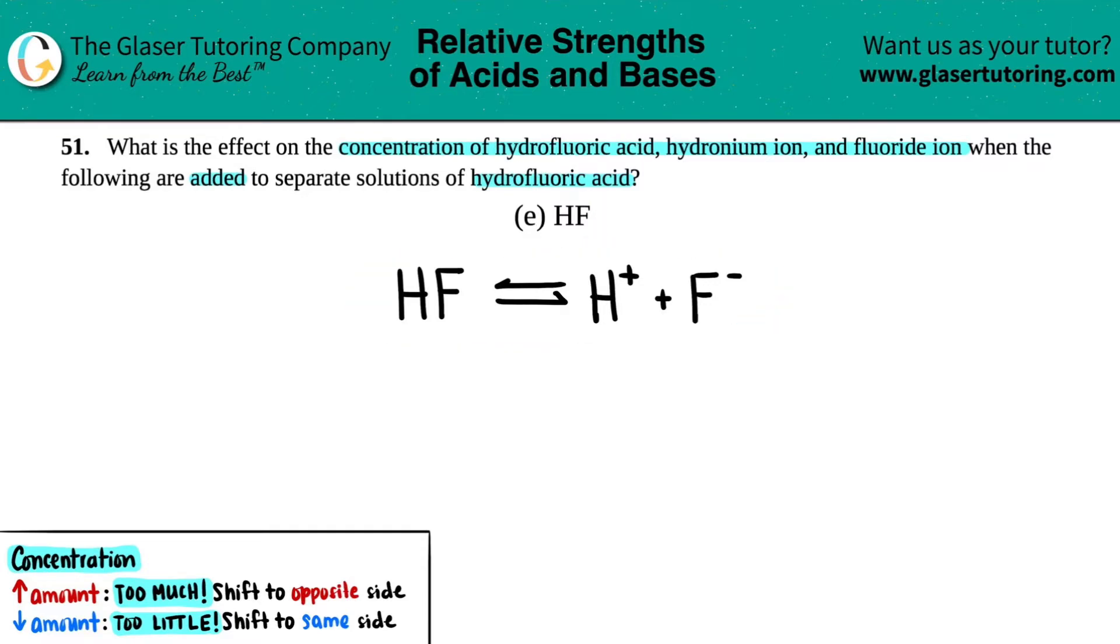I wrote down an equation here. If you need a refresher on why this equation is for this question, go back to number 51A. That's the first question in this section where we describe what's going on and why it's HF, which yields H+ plus F-. Hydrofluoric acid yields hydronium and fluoride ion. Those are your three components.